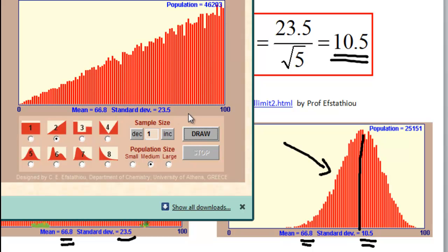Okay, here I just drew the population with sample size 1 so this is just like representing the population, the true population. My population is 46,203 trees in the forest. And now look what's going to happen when I increase my sample size to 5.